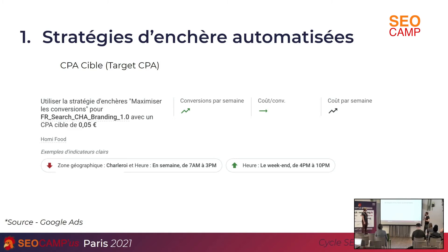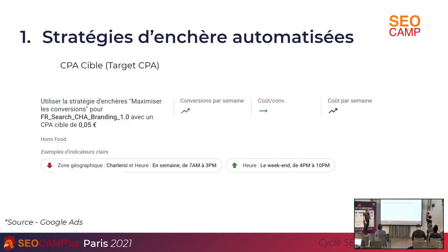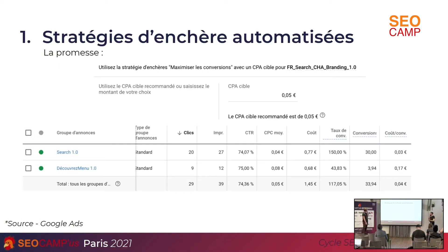On va voir que dans une zone donnée, ça convertit mieux, donc il va cibler cette zone. Ou peut-être de telle heure à telle heure, il va vous aider dans le paramétrage de votre compte. Vous n'avez plus besoin d'agence, c'est lui qui s'en occupe. Et donc il y a une promesse. Quelle est la promesse ? On voit la recommandation : mettez votre CPA à 5 centimes, alors que nos campagnes tournaient déjà à 4 centimes.